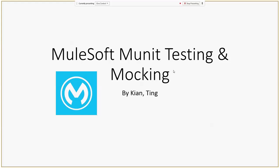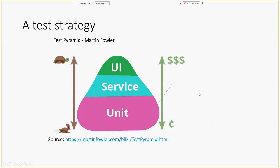What I'm going to talk about today is unit testing and mocking. I talked to Ron briefly about the test strategy. Most testers know about the test pyramid by Martin Fowler — you have UI testing at the top, then service testing and unit testing at the bottom. Most automation happens in unit and service testing, but for integration we could also automate UI testing.